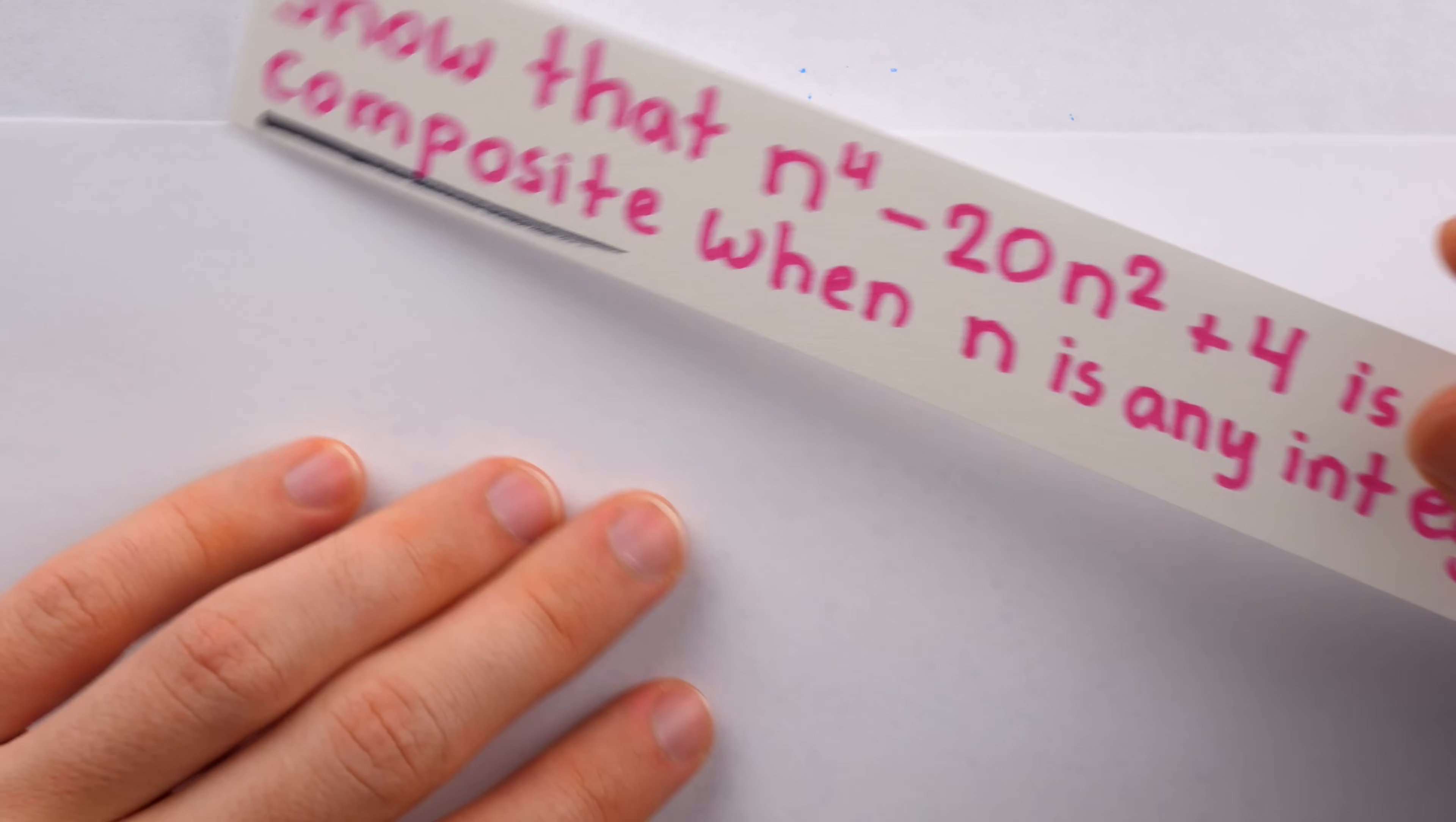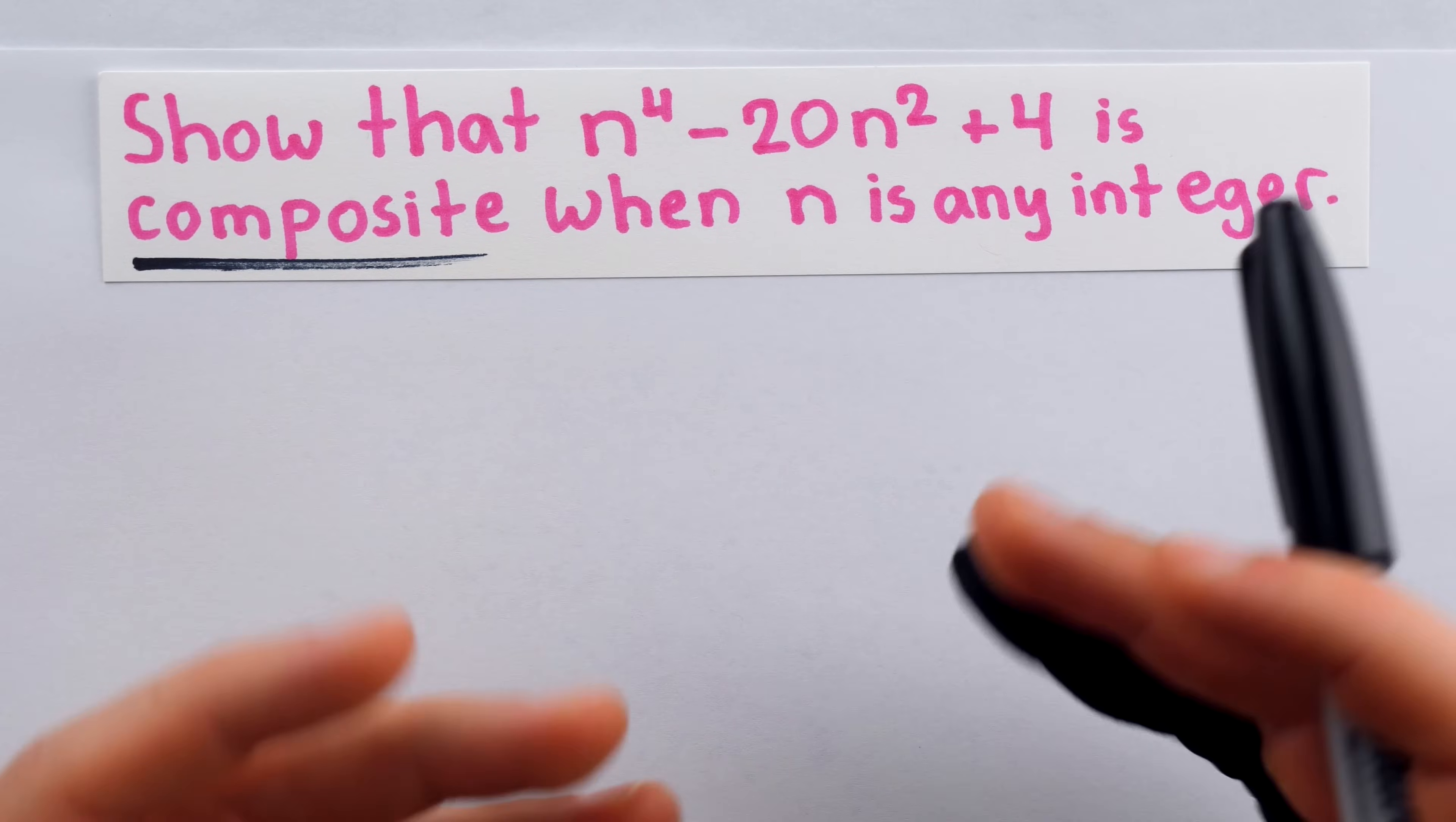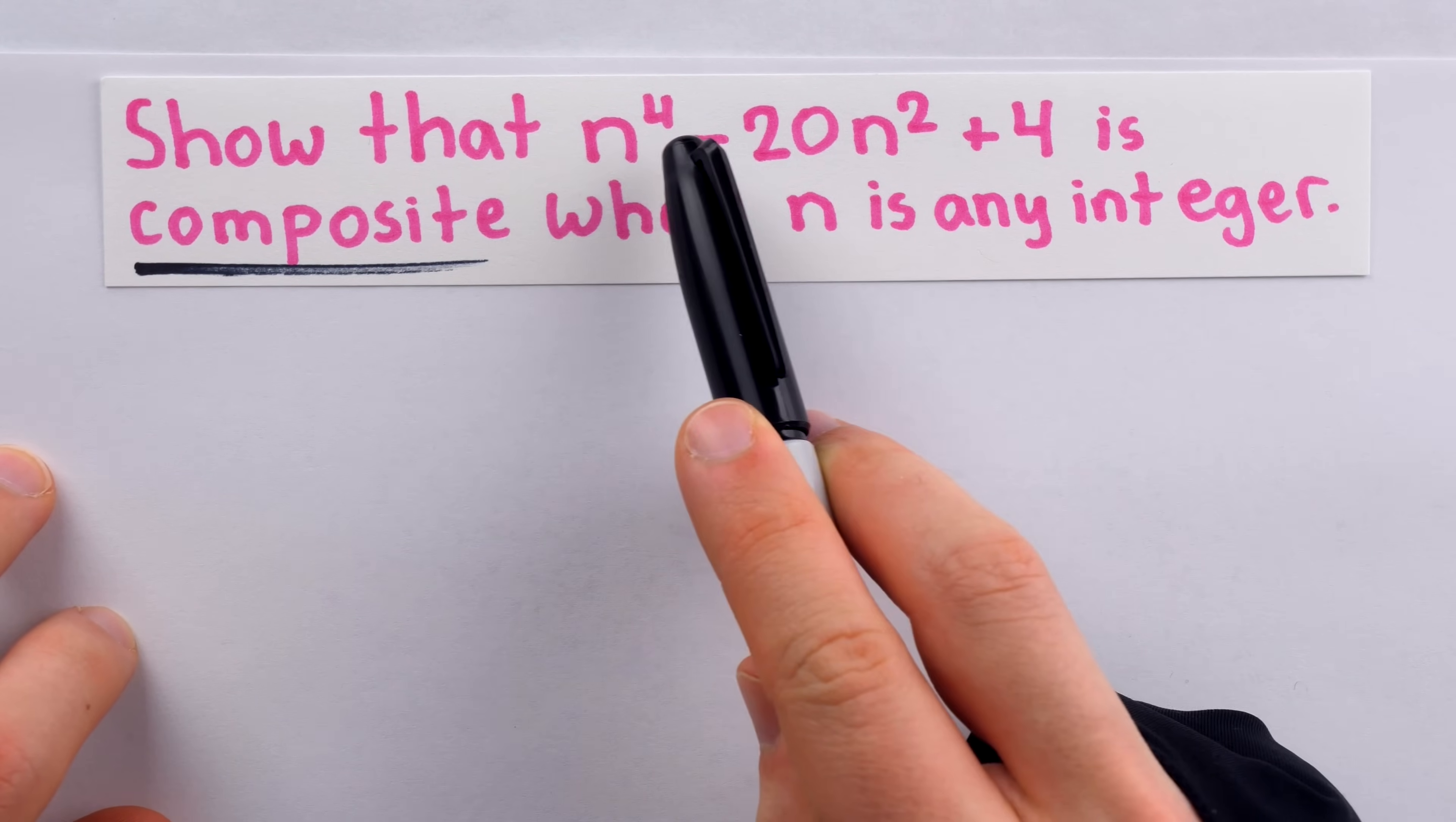Anyhow, it comes down to divisors or factors. So the first thing we would probably try to do to show that this is composite when n is any integer is to try to factor this polynomial. A composite number has to have factors other than 1 and itself and the negatives, so let's see if we can factor this thing. This polynomial by itself isn't a perfect square, so we can't factor it in that way. However, a difference of squares may be promising.